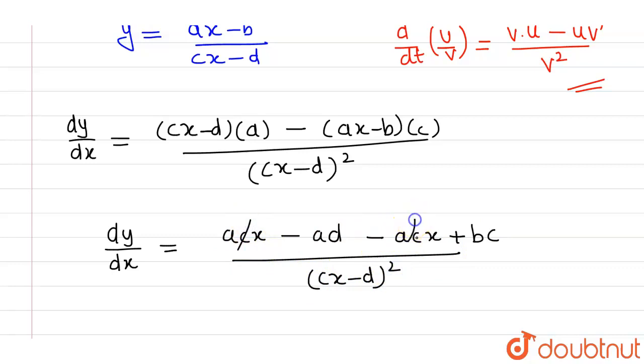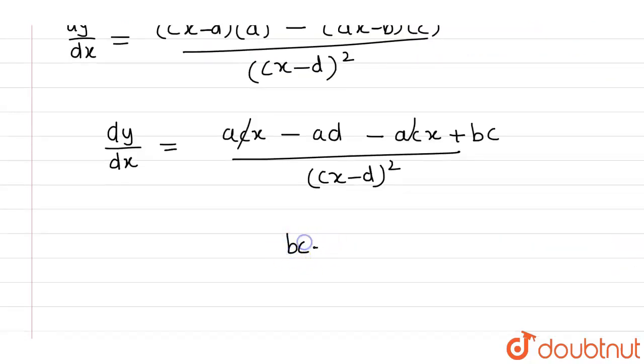Plus acx minus acx will cancel out, and overall you will be getting bc minus ad divided by cx minus d whole square. This is equals to dy over dx. So this is our answer. I hope you understood. Thank you.